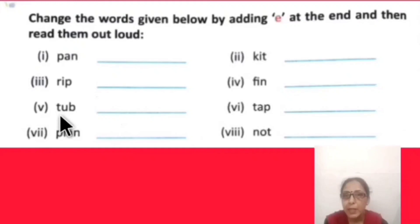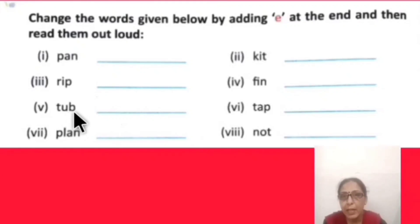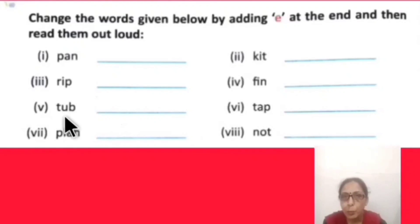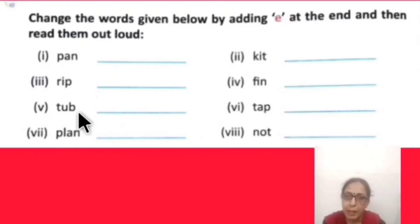Next word: T-U-B, 'tub' — which everyone has at home. When E is added at the end, the word becomes 'tube.' Tube — like a tube light at home, or a water tube used to water plants.